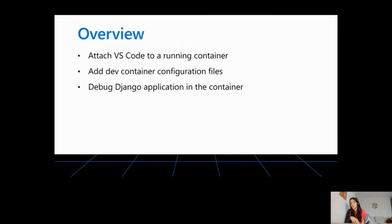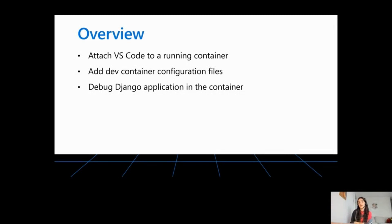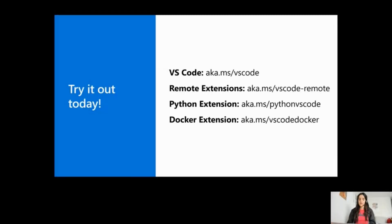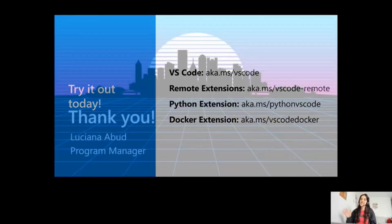In this demo, we've seen how you can attach Visual Studio Code to a running container, how you can add dev container configuration files to an application you wish to containerize, and how to open VS Code in this dev environment for an isolated and replicable development environment. We've also seen how to use the Python extension to debug Django applications in the container with all the features you'd have locally. You can try all of this today — get Visual Studio Code and the extensions through the links below, try it out, and send us your feedback on how we can improve this experience. Thank you for watching!